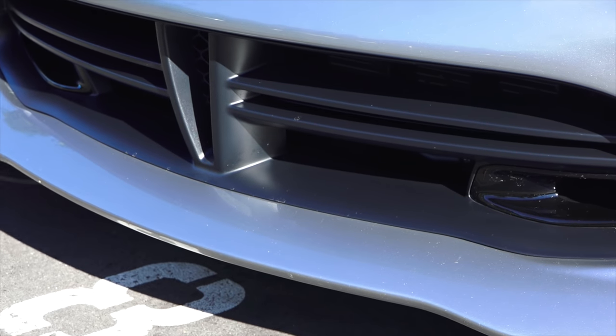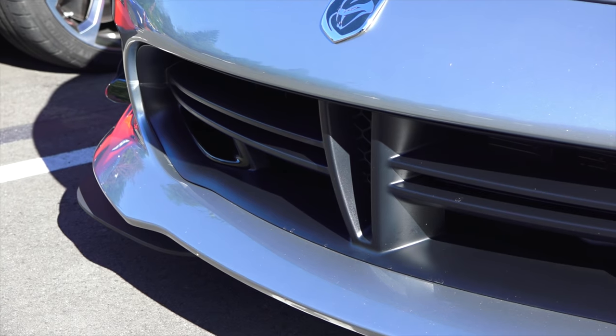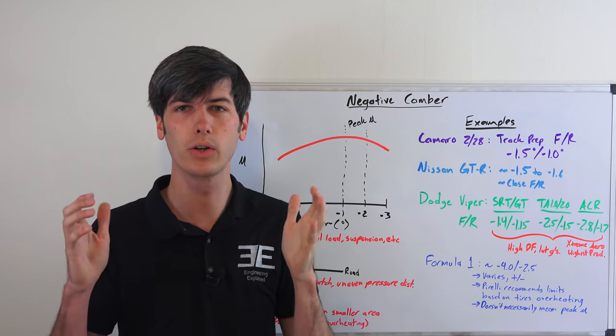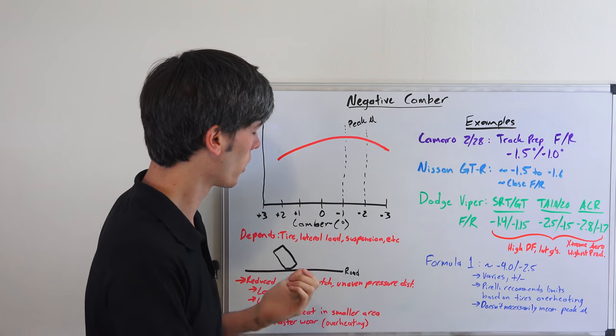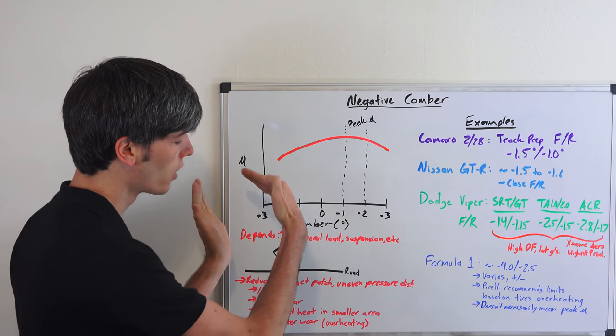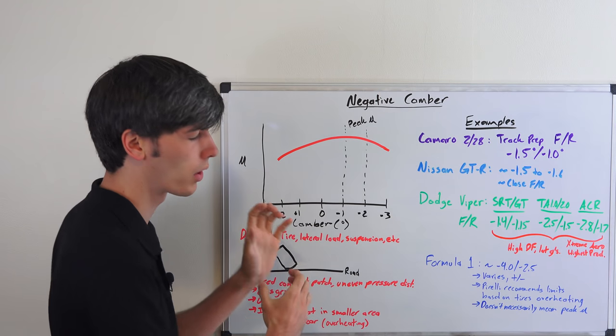The ACR with extreme aero actually has the highest production downforce of any production vehicle. So think about what that means. If you have super high downforce, then you can take corners at higher lateral Gs, and if you can take corners at higher lateral Gs, you're going to be placing a greater load on your tire.